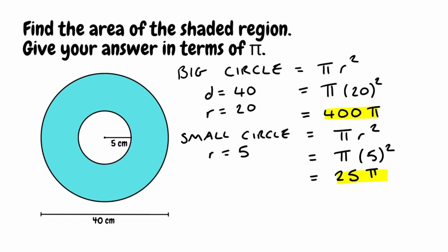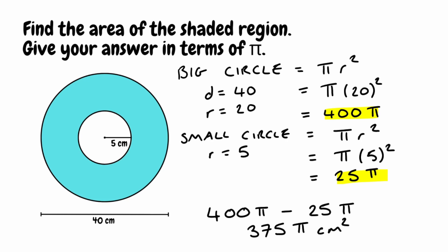To get our shaded region all we're going to do is take the area of the large circle, which was 400 pi, and take away the area of the smaller circle, which was 25 pi. So 400 pi take away 25 pi gives us 375 pi. Our dimensions were given in centimetres and because we're figuring out an area our units would be centimetres squared. So our final answer for the shaded region would be 375 pi centimetres squared.